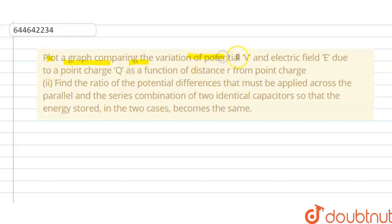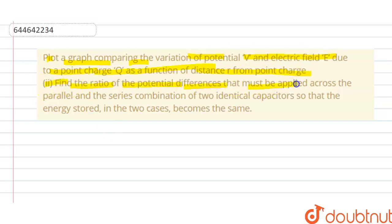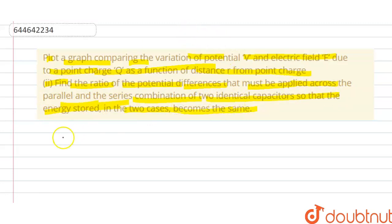Hello students. Today our question is: plot a graph comparing the variation of potential V, electric field E due to a point charge Q as a function of distance r from the point charge. The second part is: find the ratio of potential difference that must be applied across the parallel and series combination of two identical capacitors so that energy stored in the two cases becomes the same.